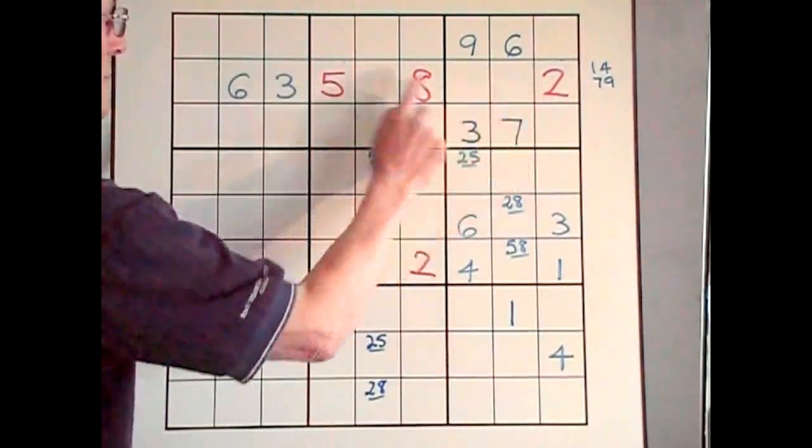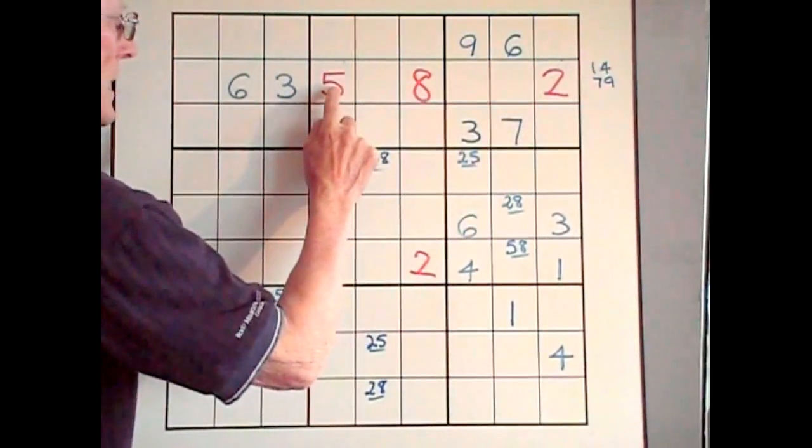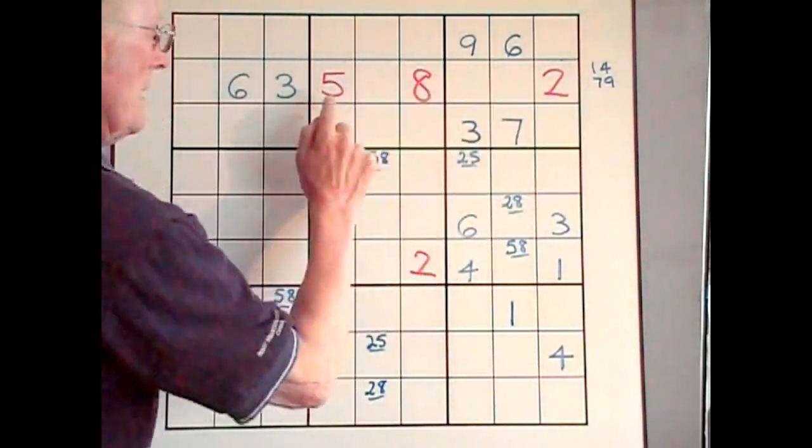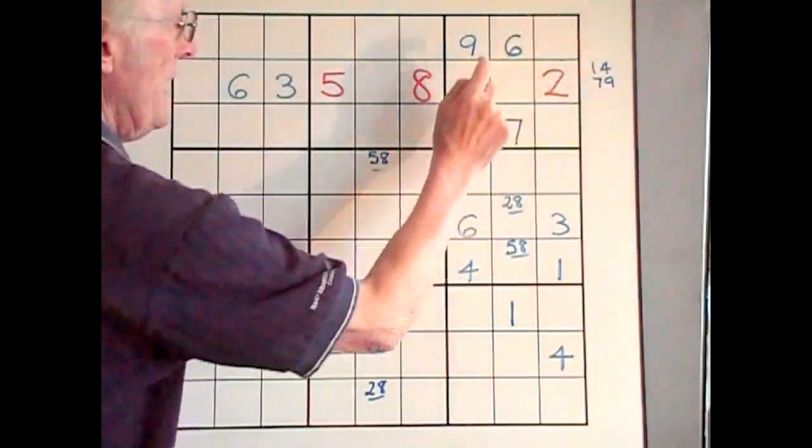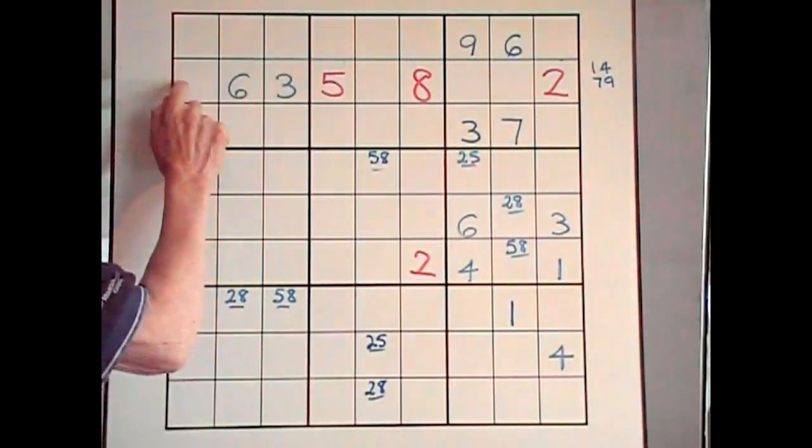And if you go through 1, 2, 3, 4, 5, 6, 7, 8, 9, you know that 1, 4, 7, 9 have to go in those empty cells.